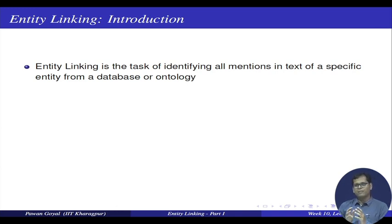What we are assuming here is that we have a database, also called a knowledge base or ontology, where we know what different entities are needed, and with each entity we have some additional information. For example, think of all the Wikipedia pages — you can think of each Wikipedia page as an entity page with a lot of information about that entity. That is the knowledge base. When you encounter a text, your problem is to find out if a particular n-gram or phrase corresponds to an entity in Wikipedia. That is the overall idea of entity linking.